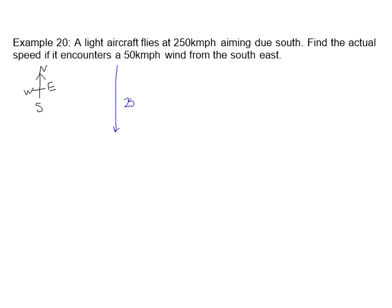Now we have a wind that's coming from the southeast. That means it's coming from the southeast, so it's coming up like that. So that means it's actually traveling in a northwesterly direction. So our vector here would be northwest.